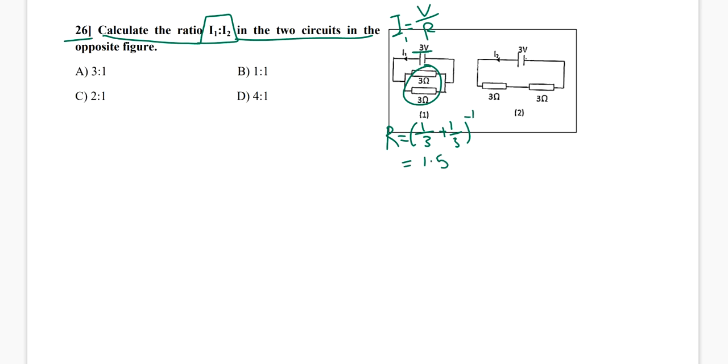So the I1 will be 3 by 1.5, which equals 2 ampere.